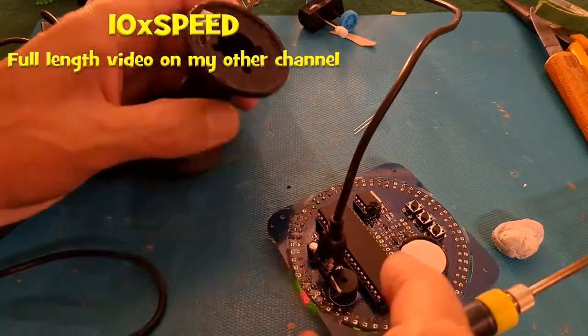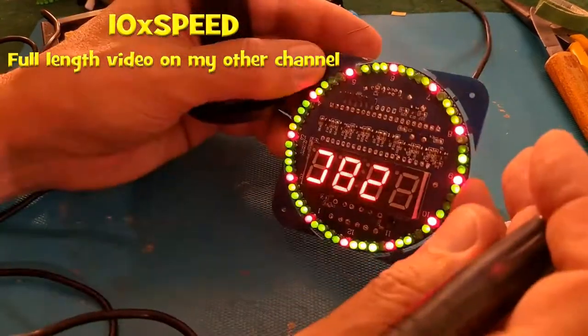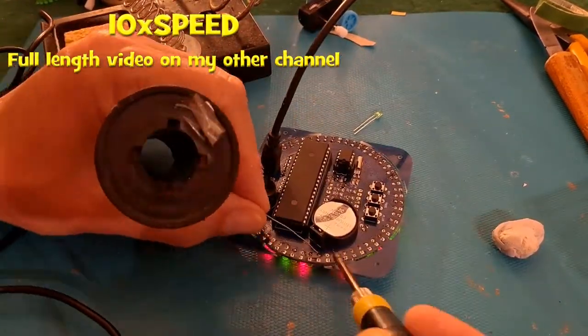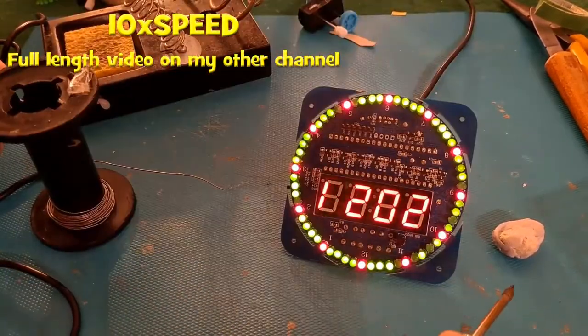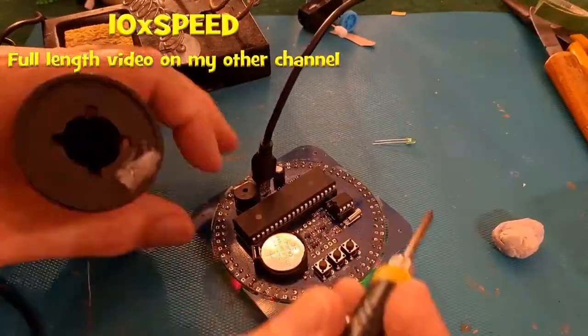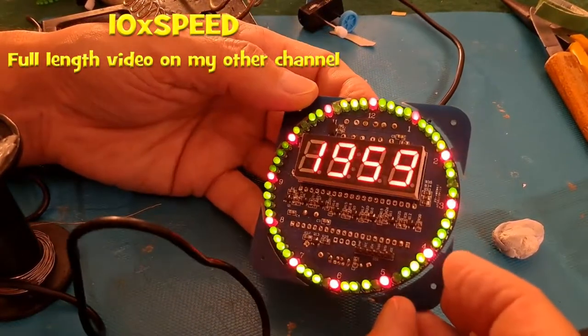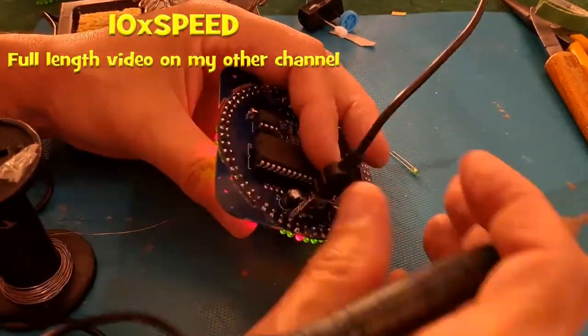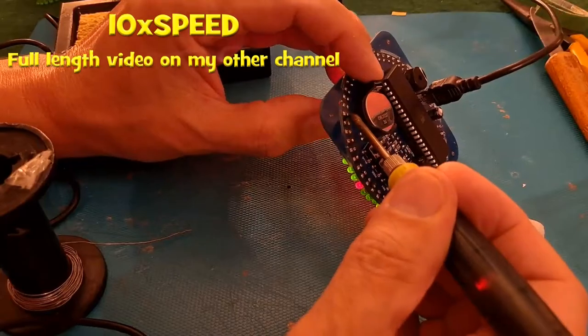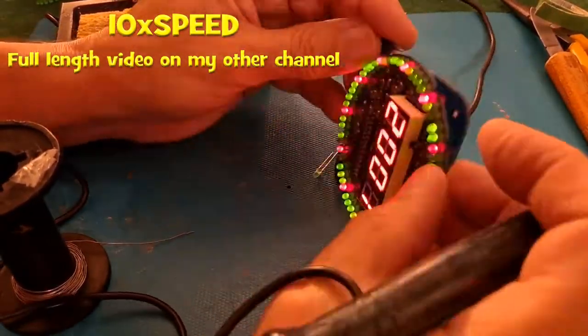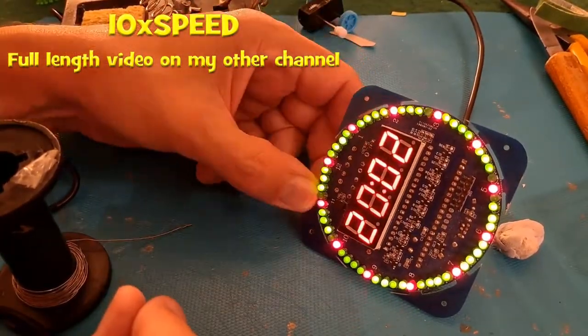It might be worth trying to put a soldering iron on the back of it and just see if that improves it because that one's come on now that I've wobbled it around a bit. Soldering looks absolutely fine, that looks spot on, so I think it's more likely it's actually the LEDs are failing inside.